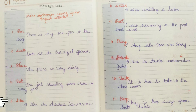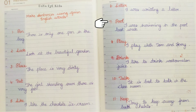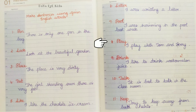Like: I like the chocolate ice-cream. Letter: I was writing a letter. Pool: I was swimming in the pool last week. Play: I play with Tom and Jerry.